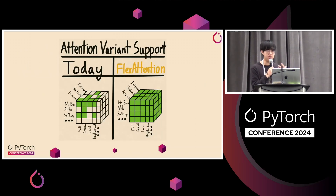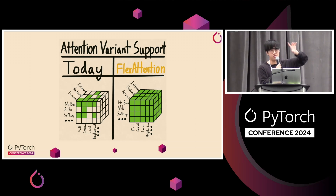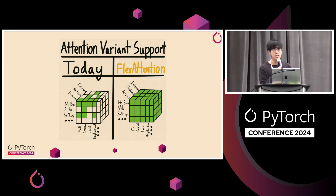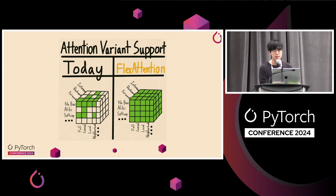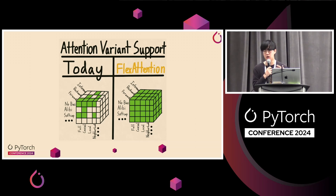The way we think about this is that today the attention kernel landscape looks like a hypercube of different attention variants that are supported. Although people have done a tremendous job supporting many variants, the overall cube still ends up looking sparse. And even worse, if you have your own new personal attention variant, most of the time the attention kernels won't support it. With Flex Attention, we aim to support every single point in this cube — all efficiently, all with their very own fused attention implementation.